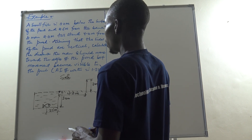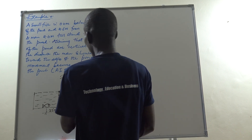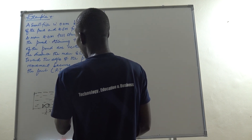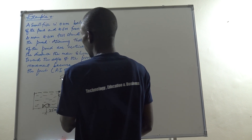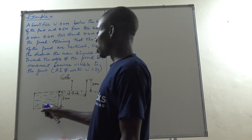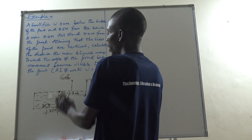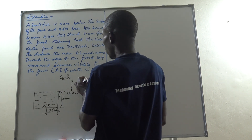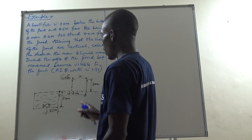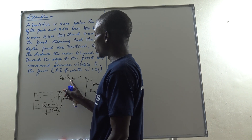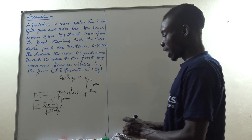We need to calculate the distance the man should move towards the edge of the pond before his movement becomes visible. If he moves and comes to a certain point, the fish will automatically see him — it becomes visible to the fish. He should move some distance X to this side before the fish can see him. Assuming the man moves a distance X, once he goes beyond that point his head will come out and the fish will be in a position to see him.